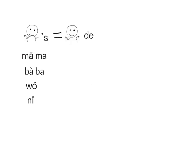Now let's learn about belongings. In English, you say 'Mama's', 'Papa's', 'Jennifer's'. In Chinese, we say 爸爸的, 妈妈的, or Jennifer的. This 的 is used to show belongings.